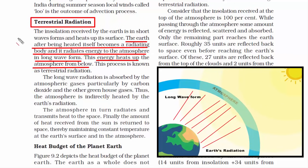If you treat the exosphere as the topmost layer of the atmosphere, then the troposphere is the bottom or lowest layer. The earth, after being heated, itself becomes a radiating body and radiates energy back to the atmosphere. Warm air goes up vertically and touches the bottom layer of the atmosphere — in other words, this radiating energy heats up the atmosphere from below. This process is known as terrestrial radiation.